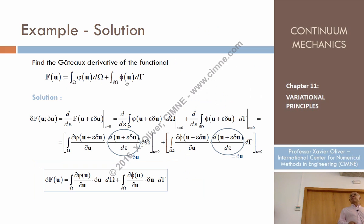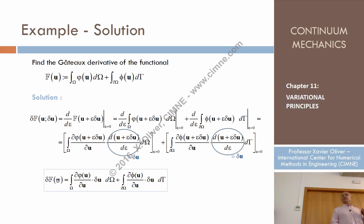Delta U stands for a variation of the function at which we are computing the derivative. Let's consider a functional F and compute its Gâteaux derivative in that direction. I replace the argument U by U plus epsilon δU, take the derivative with respect to epsilon and evaluate at epsilon equal to zero. The final result is that the variation — the Gâteaux derivative of F in the direction δU — is obtained by the derivative of φ with respect to U times δU, plus the boundary derivative with respect to U times δU.